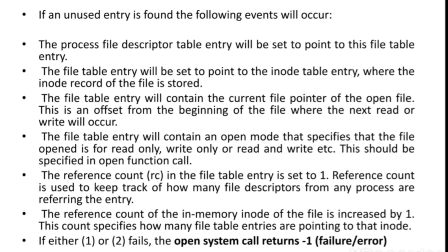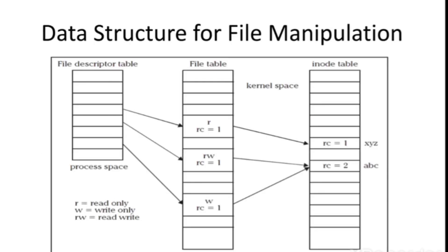The file table entry also contains an open mode. For example, looking at this diagram, a particular process has opened three files: one is open for reading, one is open for reading and writing, and one is open for writing. Open mode tells what purpose the file is opened for — it may be open for reading, writing, or both reading and writing.